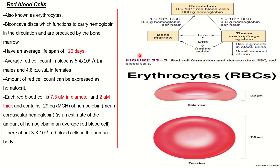The average red blood cell count in the blood is 5.4 times 10 to the power of 6 cells per microliter in males and 4.8 times 10 to the power of 6 cells per microliter in females. This is because males have higher levels of testosterone and androgens, which are necessary for the production of red blood cells.